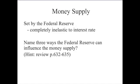Money supply is relatively simple. Just as in Chapter 30, we assume it's completely set by the Federal Reserve. The Fed picks a target money supply and sets it, completely inelastic to the interest rate, so it's just a vertical straight line. As a review, pause the video and name three ways the Federal Reserve can influence the money supply, then pick the one that's most important in practice.